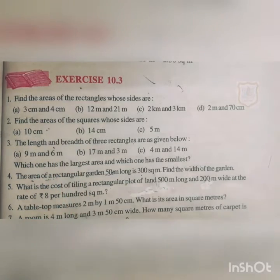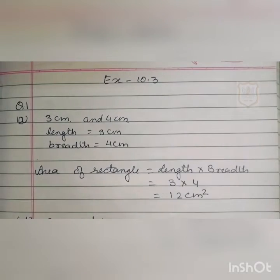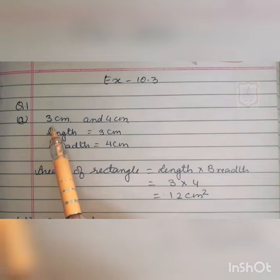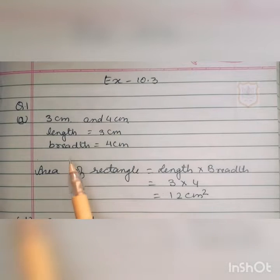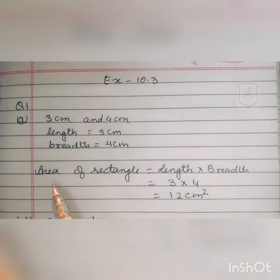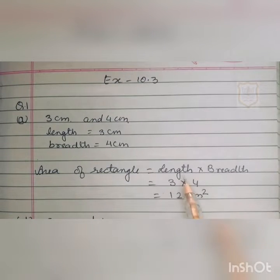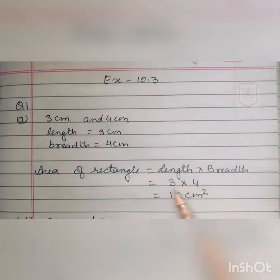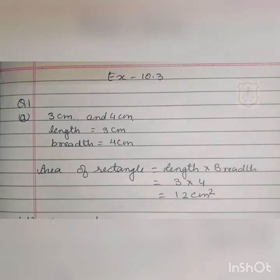We know the formula to find out the area of a rectangle. Here, 3 cm and 4 cm are given, so 3 is the length and 4 is the breadth. The area of rectangle is L × B, that is length into breadth. Length is 3 cm and breadth is 4 cm, so multiplying 3 by 4 we get 12 cm². The answer is 12 square cm.